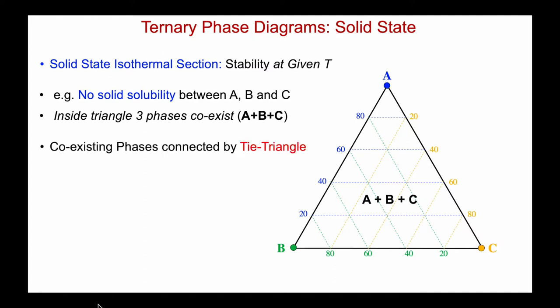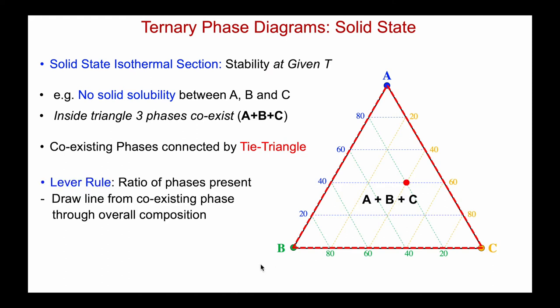We connect the coexisting phases by what's called a tie triangle, shown here in red. The vertices are placed at the compositions of the coexisting phases — in this case, pure A, B, and C. And we can use the lever rule to calculate the ratio of the phases present for any given composition.